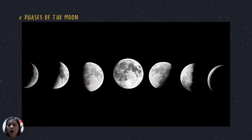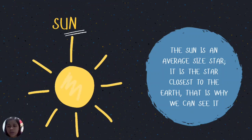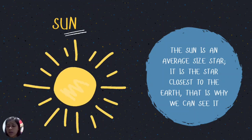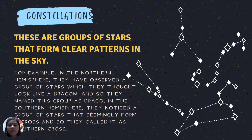The sun is one particular example of a star. It is an average-size star and the star closest to the earth, which is why we can see it. Now we will learn about the source — particularly the group of stars that form definite patterns in the sky — constellations.